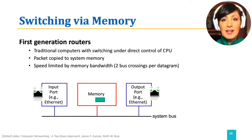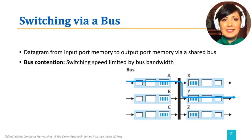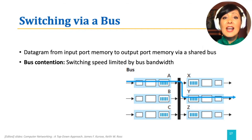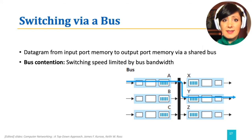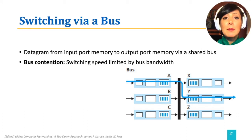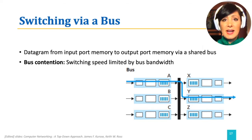In switching via bus, an input port adds an internal label to the packet that identifies the output port it should go to. Then it puts it on a shared bus. All the output ports will see the packet on the bus, but the port whose label matches with the packet's label will keep the packet and the other ports will discard the packet.